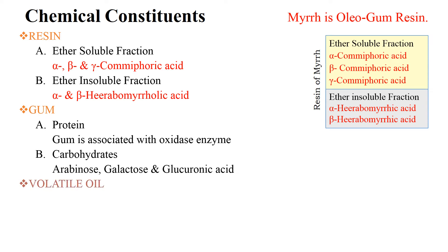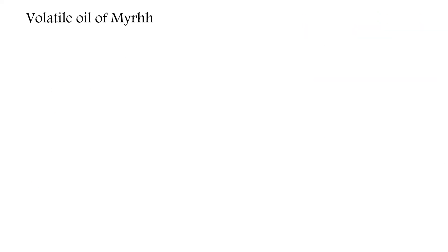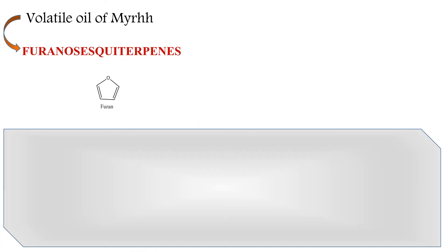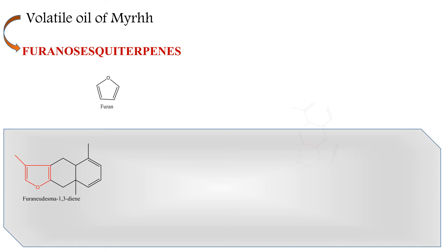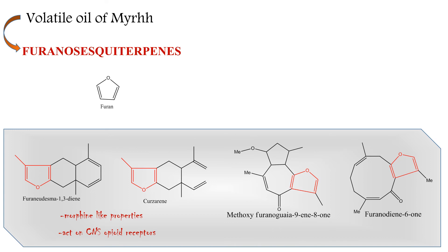The volatile oil of Myrrh contains a number of components such as cumenic aldehyde, eugenol, and limonene. The interesting components are furano-sesquiterpenes. Furanodysma-1,3-diene and curzareine have morphine-like properties and act on CNS opioid receptors. Other furano-sesquiterpenes include furanodien-6-one and methoxy-furanogermacran-6,8-one, which have antibacterial and antifungal activities.